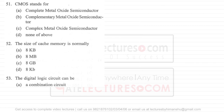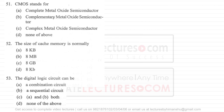Question number 51 says CMOS stands for — CMOS means complementary metal oxide semiconductor. It is not 'complete metal oxide semiconductor,' it is not 'complex metal oxide semiconductor,' it is complementary metal oxide semiconductor.